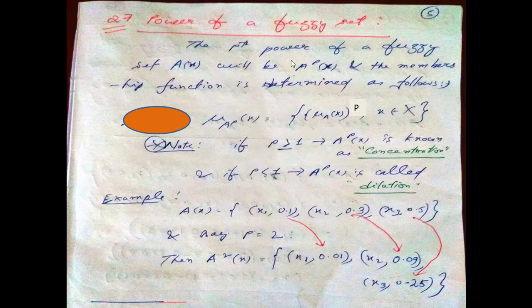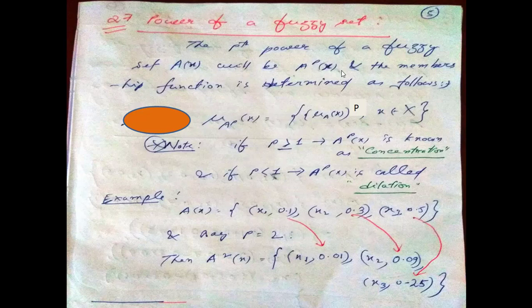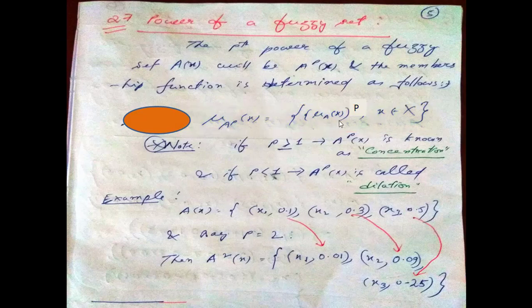The definition is: the pth power of a fuzzy set A(x) will be A to the power p(x), and for that the membership function is defined as μ_A^P(x) equals μ_A(x) to the power p, where x belongs to capital X.